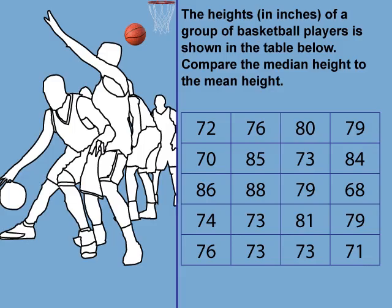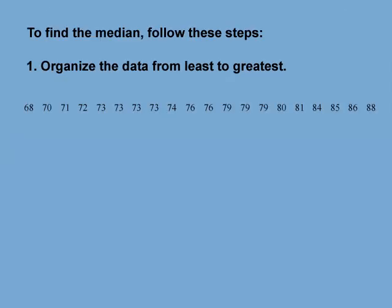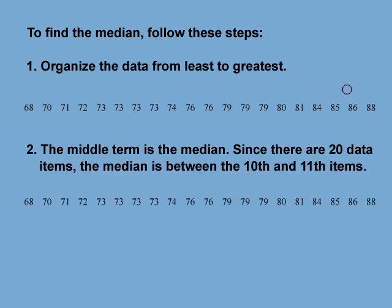Let's look at another example. The heights in inches of a group of basketball players is shown in the table below. Compare the median height to the mean height. To find the median, first organize the data in order from left to right. Here are the 20 data items in order. The middle term is the median. Since there are 20 items, the median is between the 10th and 11th terms.